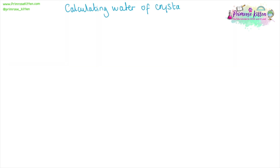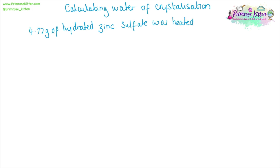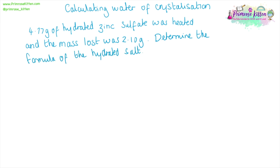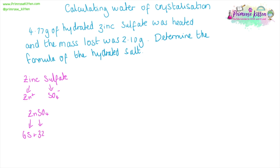Another example: 4.77 grams of hydrated zinc sulfate was heated, and it was calculated that the mass loss was 2.10 grams. Determine the formula of the hydrated salt. First we determine the formula — zinc is Zn²⁺ and sulfate is SO₄²⁻, so the formula for zinc sulfate is ZnSO₄. The Mr is: zinc 65, plus sulfur 32, plus 4 oxygens at 16, giving an Mr of 161. The Mr of water is 18 — always worth writing it down just in case.